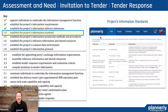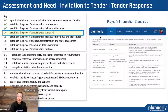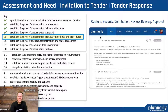And then the information standards. It's important to understand what the classifications are, what the naming conventions, the color coding, layer naming — all of the different best practices and standards for information — to make sure that we're doing the same thing and we're doing a lean approach. So establishing information standards is extremely important.